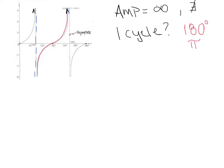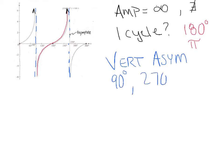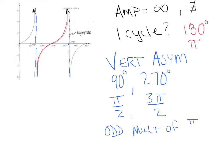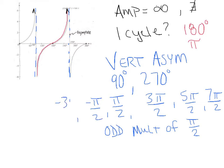These vertical asymptotes — the dotted lines — occur at 90° and 270°, which is π/2 radians and 3π/2 radians. In fact, all odd multiples of π/2 are vertical asymptotes. If we go beyond 360°, the next asymptote is at 5π/2, then 7π/2. Going backwards: negative π/2, then negative 3π/2. Every odd multiple of π/2 will be an asymptote.